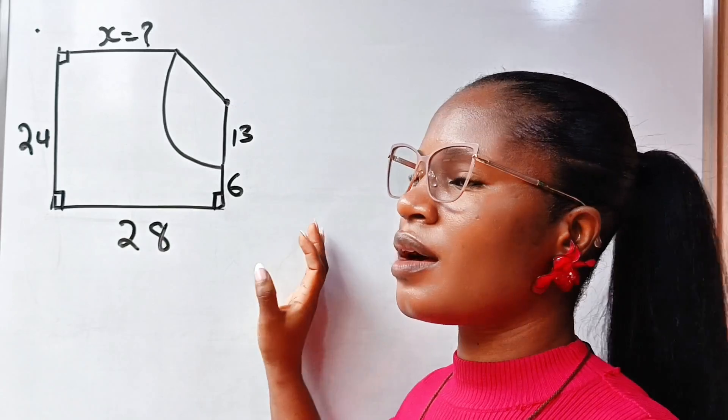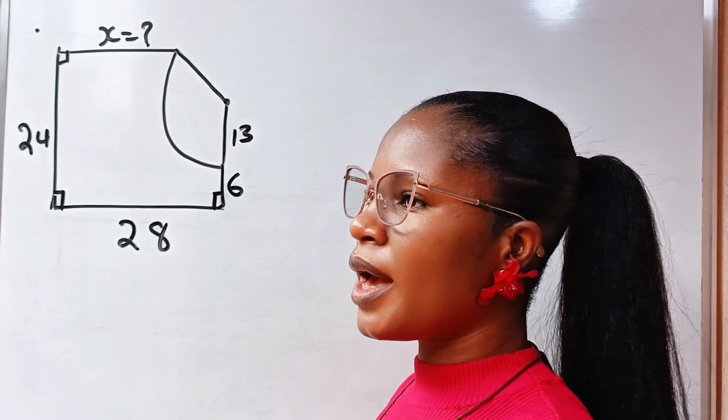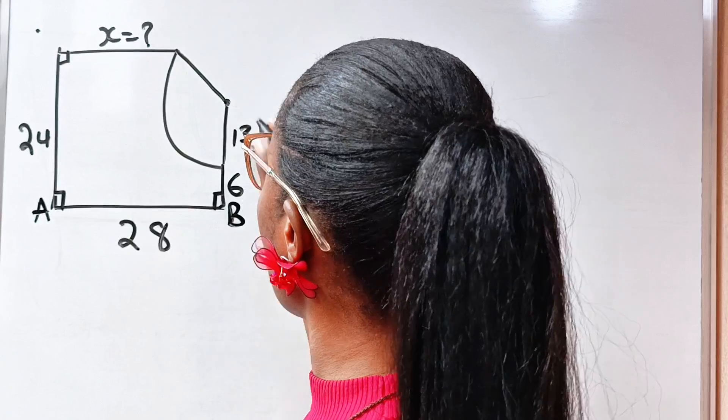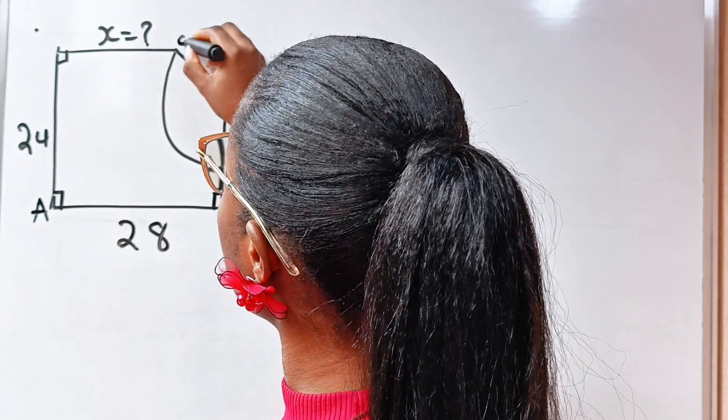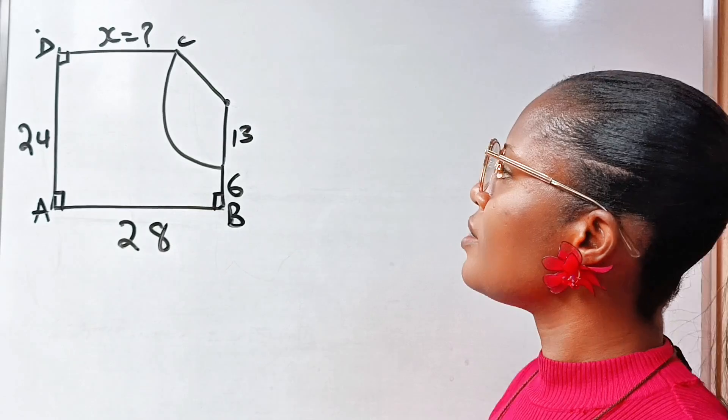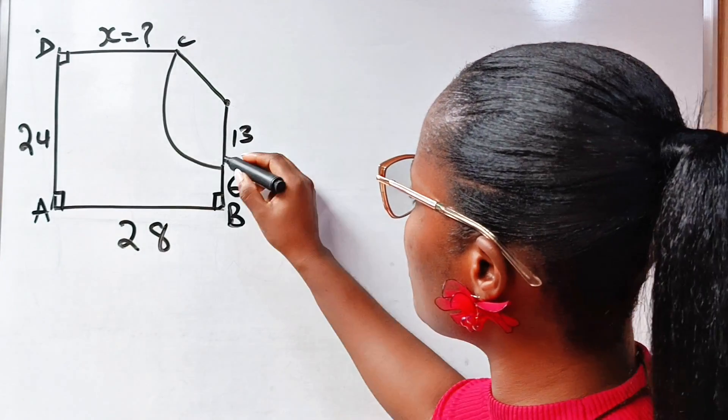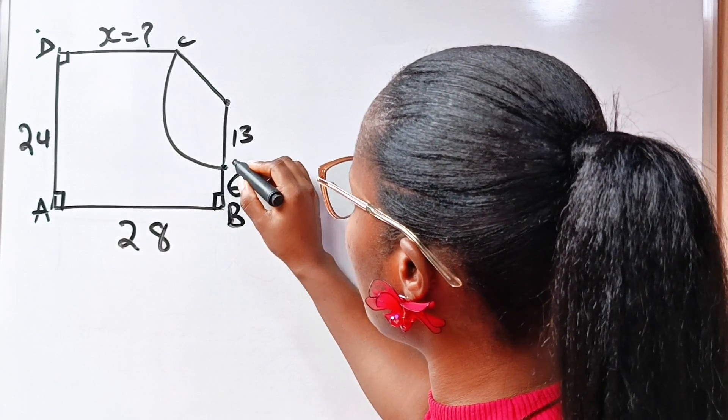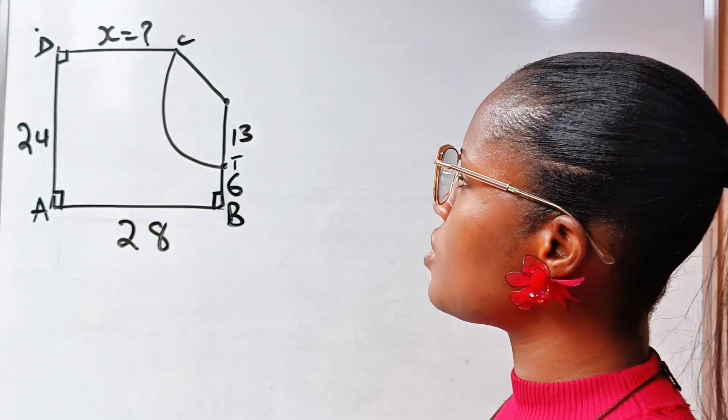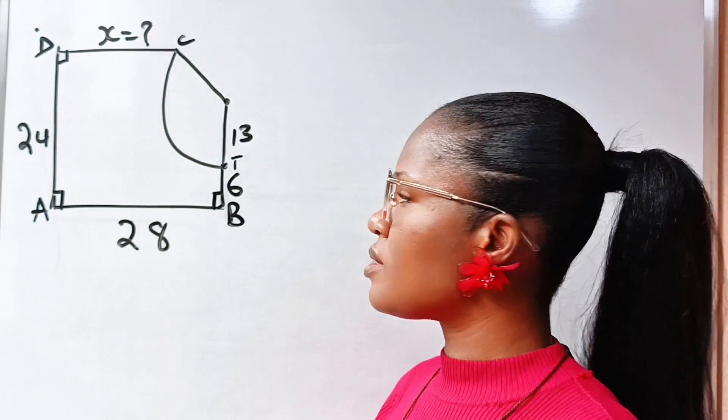Okay, so let's name this rectangle ABCD: A, B, C, D. Now let's call this place T, this particular place T. First of all, let us complete this rectangle.